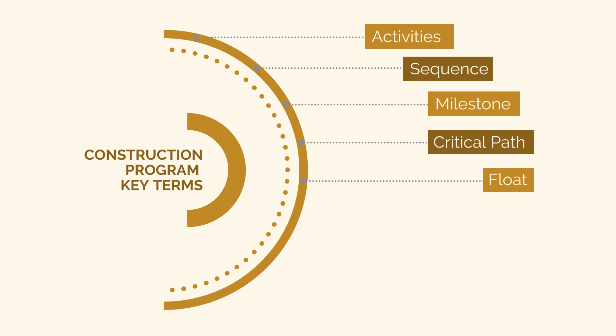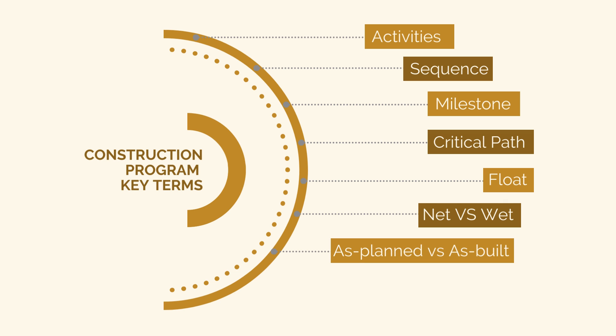Float is the amount of time an activity can be delayed before it falls on the critical path. An activity with zero float is on the project critical path. The net schedule is the actual target program used by construction teams, while a wet schedule is the schedule seen by the client and has contingency factored into it. The as-planned schedule is the schedule that was planned to be followed, while the as-built is the actual schedule constructed.